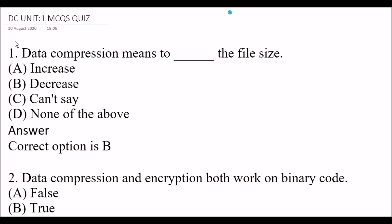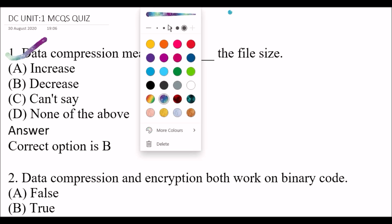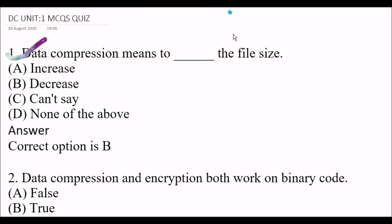Your first question is: data compression means to blank the file size. Option A: increase. Option B: decrease. Option C: can't say. Option D: none of the above. The right answer is option B, decrease. Data compression means to decrease the file size.